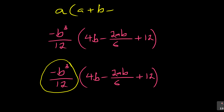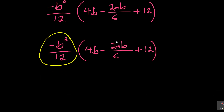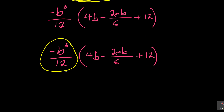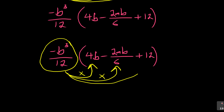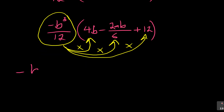It's the same as saying a times a, plus a times b, plus a times c. Even with fractions, don't worry - this one will multiply that, and it will multiply that, and it will multiply that. Just write what you are seeing. You have to write: minus b cubed times 4b.